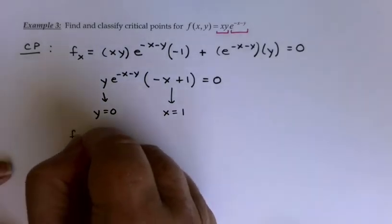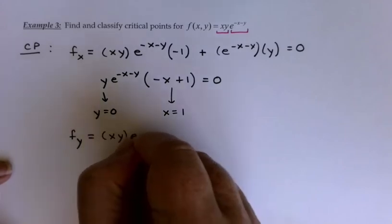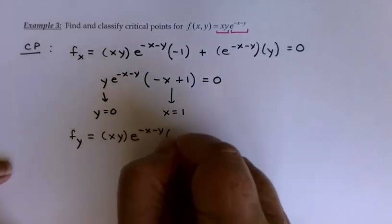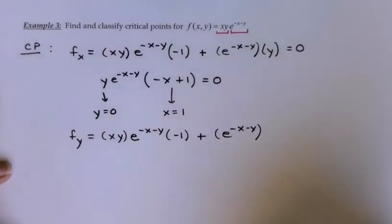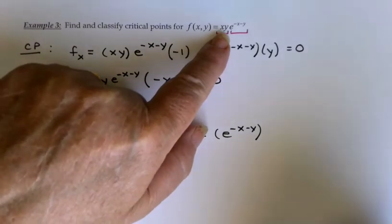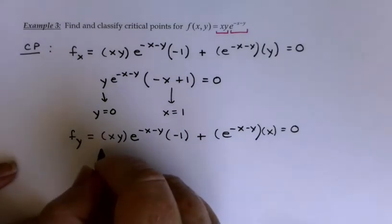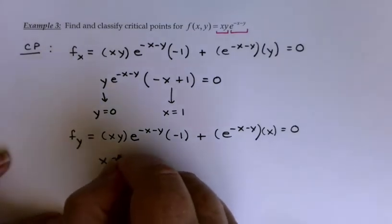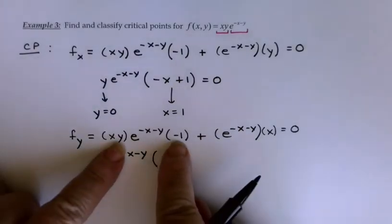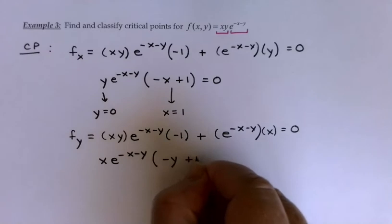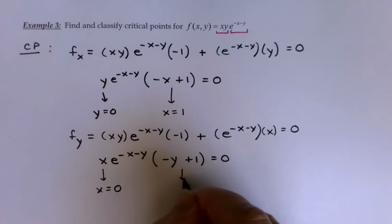Let's go to f_y. Same basic idea. I've got my first factor times the derivative of the second, which is going to look identical, plus my second factor times the derivative of the first with respect to y, which would be x this time. I could factor out x·e^(-x-y), which gives you minus y plus 1. So this time I can have x equals 0 or y equals 1.